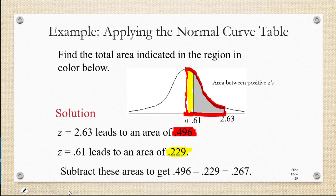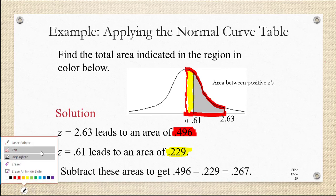So that's exactly what we're going to do. 0.496 minus 0.229 equals 0.267. That's the area that we're looking for. And we wouldn't have known this if we had not drawn our diagram.